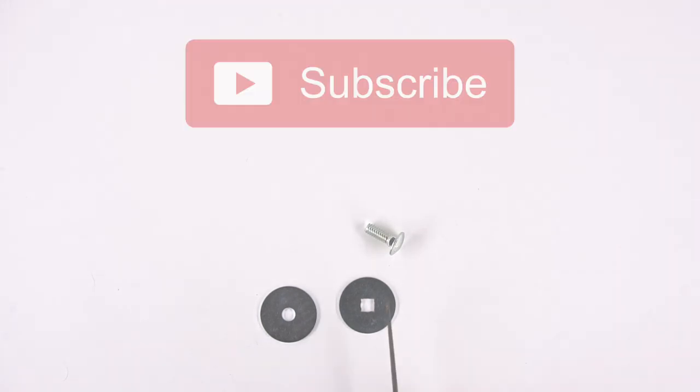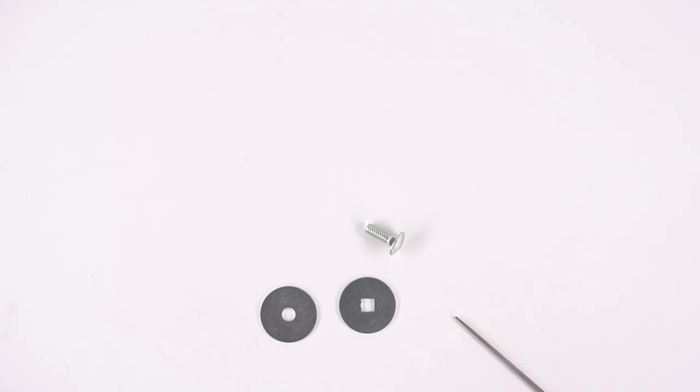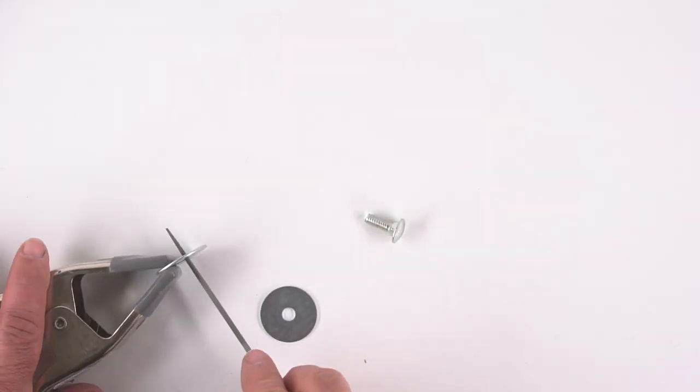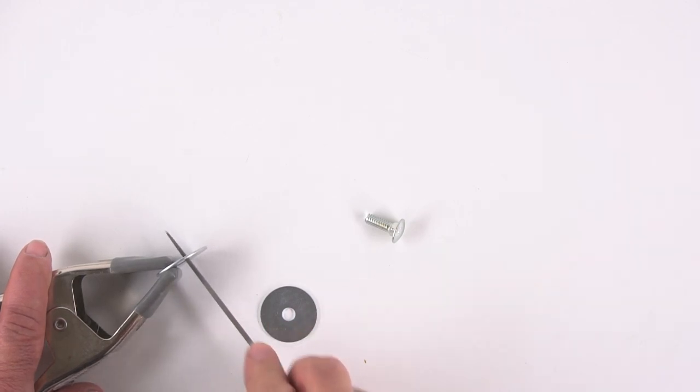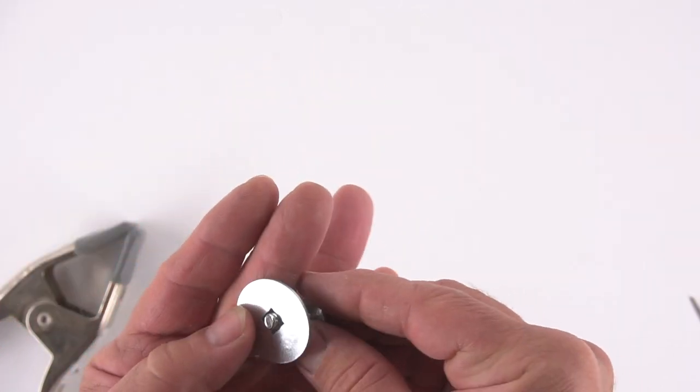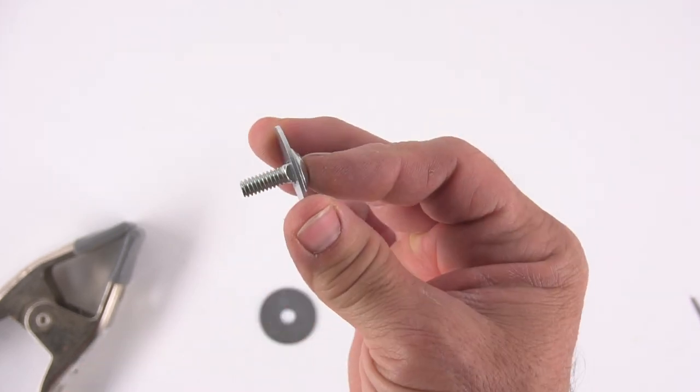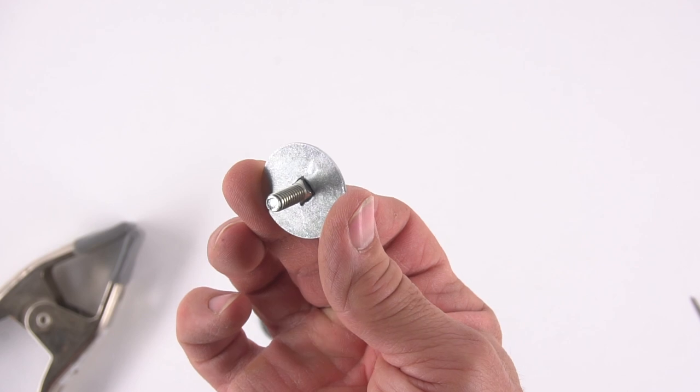Now, on here I have one fender washer that I've cut a little square part out using a jeweler's file. If you don't have a jeweler's file, you can just get a 5/16ths or 3/8ths washer, and that should be big enough for the carriage bolt to fit in all the way.